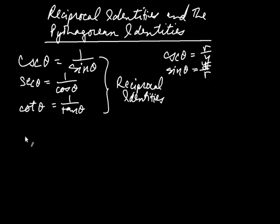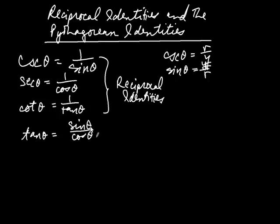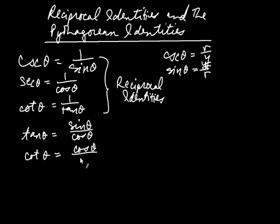A couple more important identities. Tangent is often written as sine divided by cosine. That's true because sine is y over r and cosine is x over r, so the r's cancel and you get y over x, which is tangent. Likewise, cotangent of theta equals cosine of theta divided by sine of theta. These are called the quotient identities.